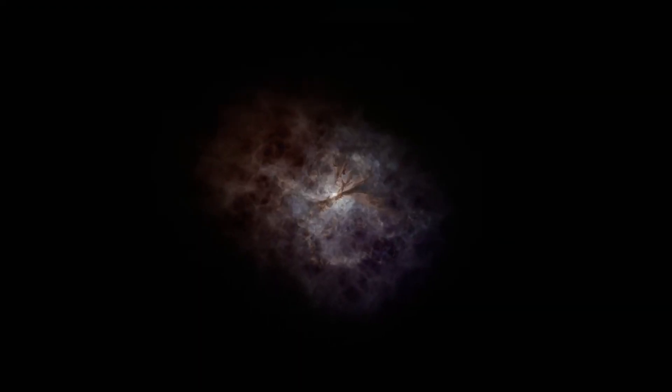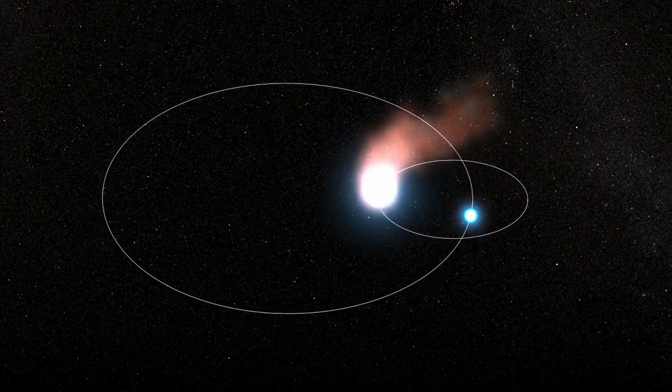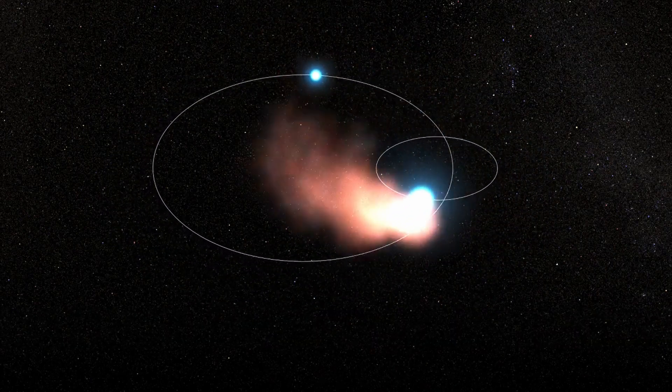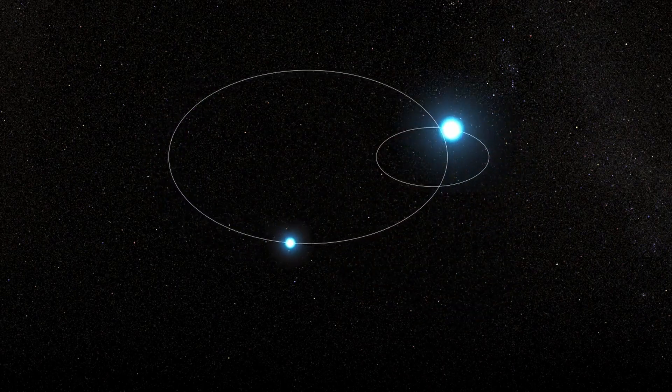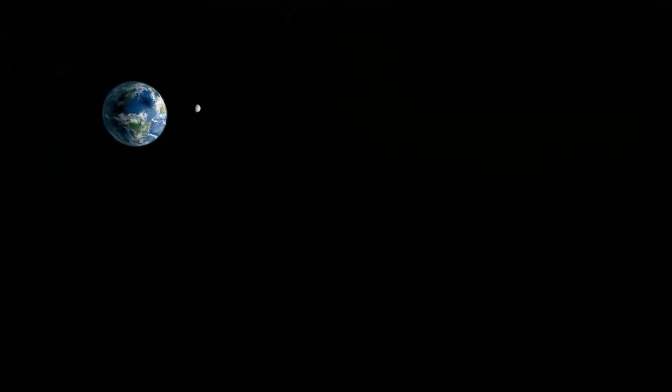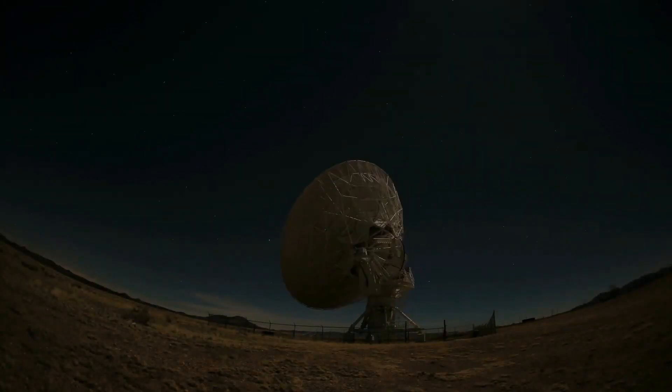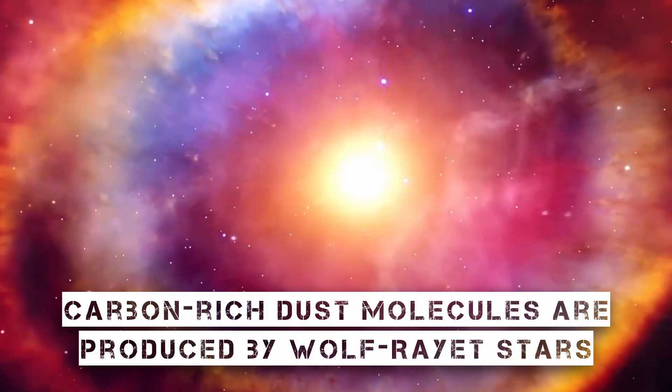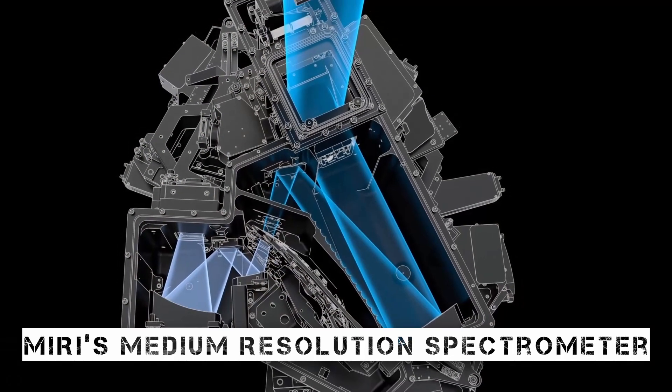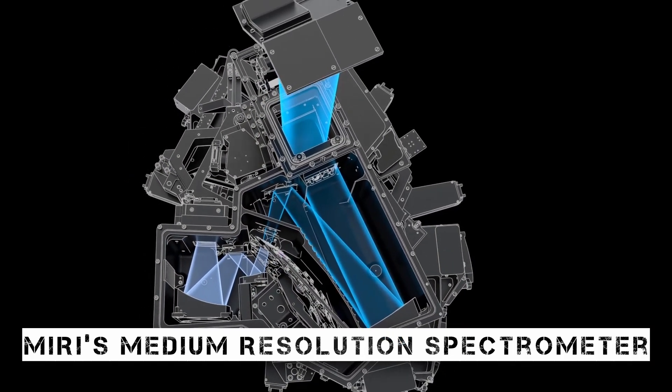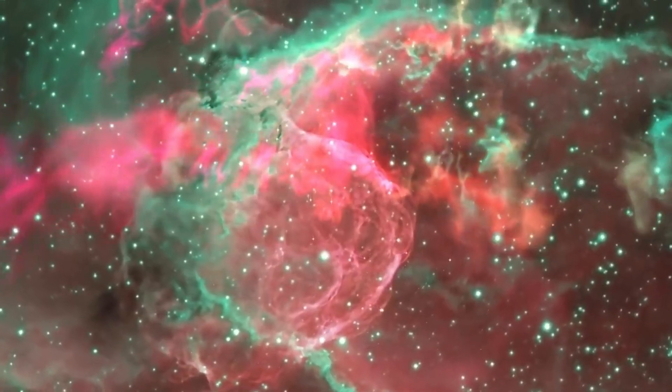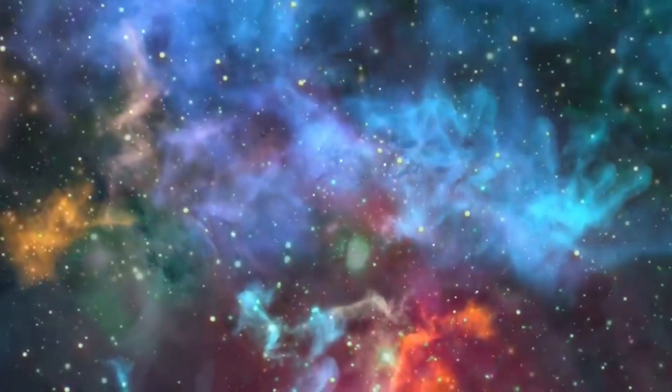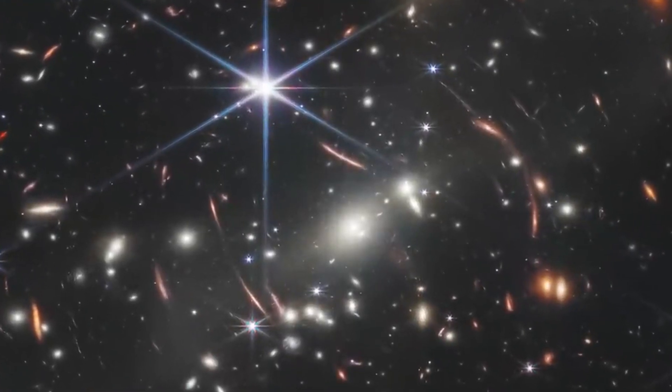Because the orbit of the Wolf-Rayet star in WR 140 is elongated rather than circular, a special ring pattern develops. The gas is not under enough pressure to generate dust until the stars are close enough to collide, about the same distance between Earth and the Sun. The new research offers the strongest proof to date that carbon-rich dust molecules are produced by Wolf-Rayet stars. The fact that the dust shells have survived suggests that the dust can endure in the harsh environments between stars and go on to serve as a source of material for future stars and planets.